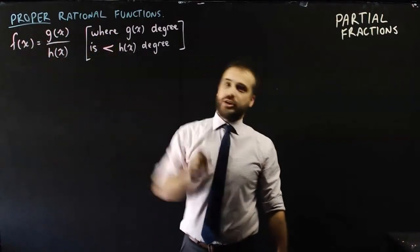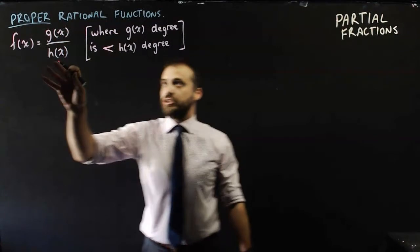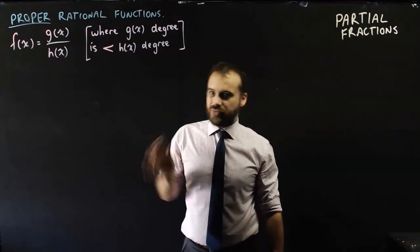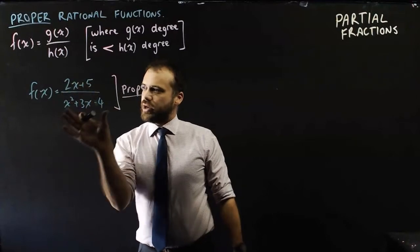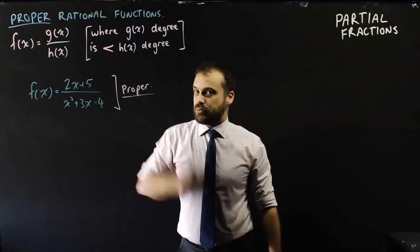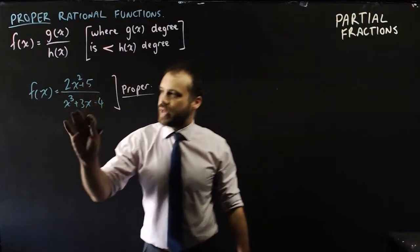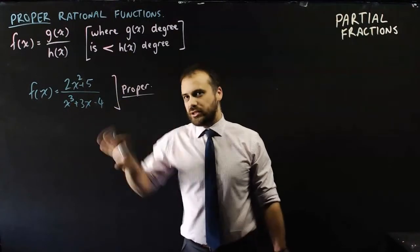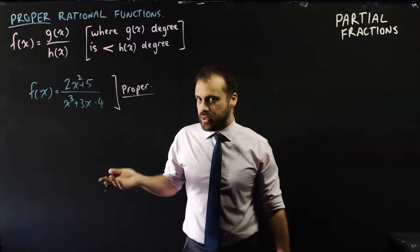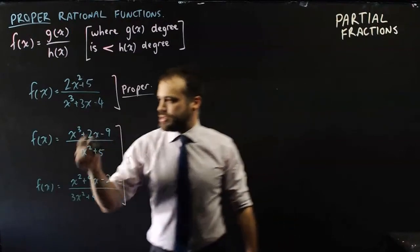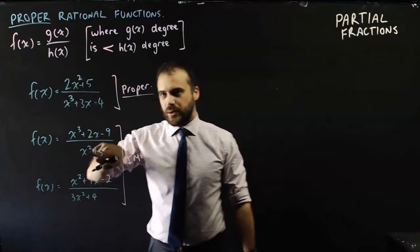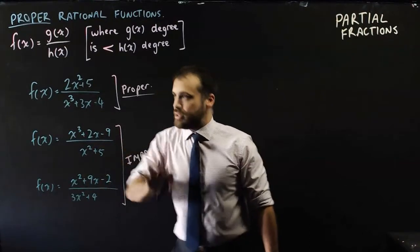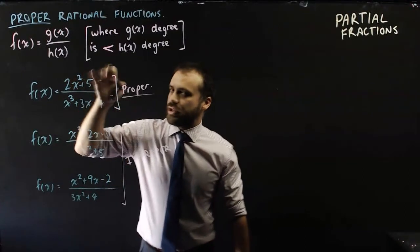The first case is proper rational functions — where you have a function divided by a function, but the one on the top has a smaller degree than the one on the bottom. For example, a linear function divided by a quadratic is proper: degree 1 on top, degree 2 on the bottom. Similarly, 2x² + 5 over x³ + 3x − 4 is still proper because degree 2 is less than degree 3. Improper rational functions have degree 3 on top and degree 2 on the bottom, or both the same degree. So proper rational functions have a lower degree on the top than on the bottom.